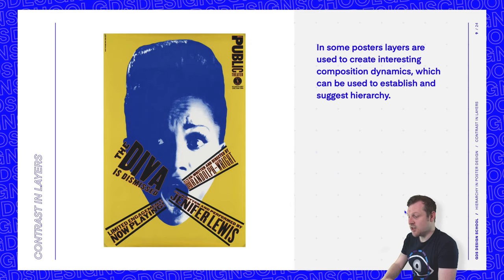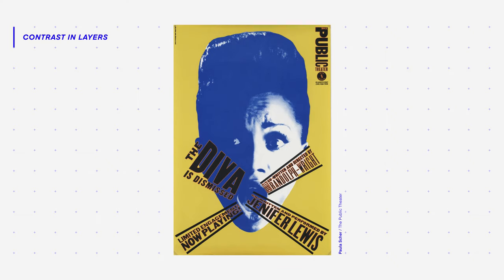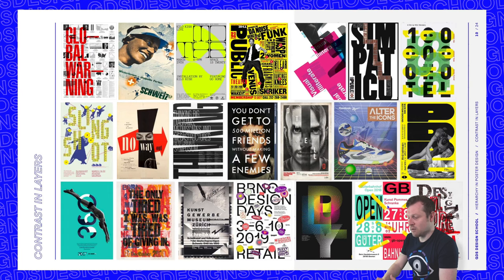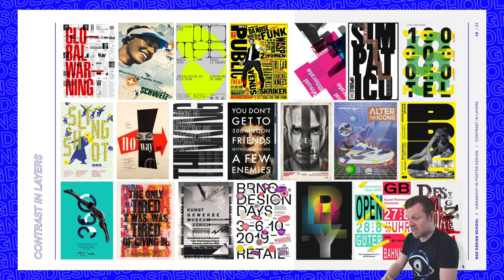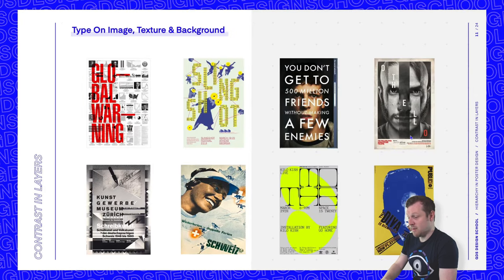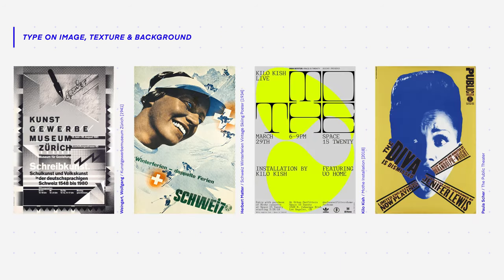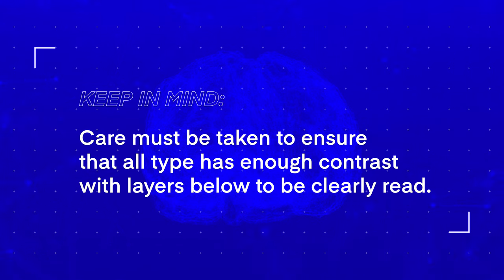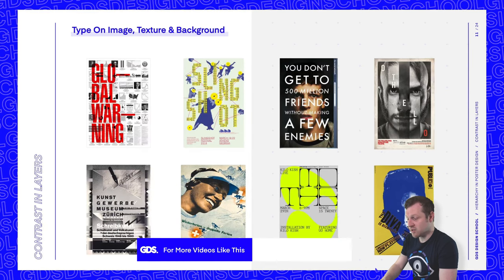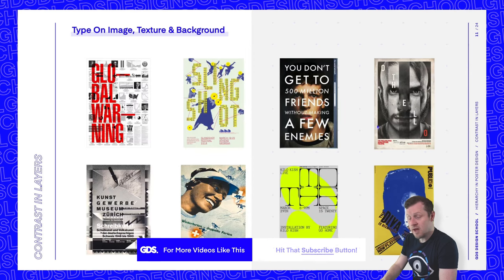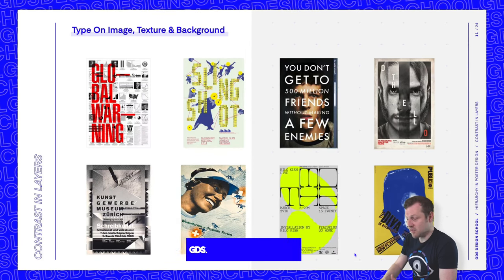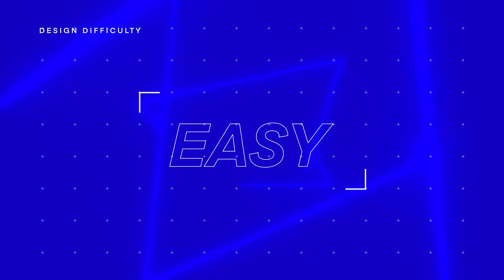In some posters, layers are used to create interesting composition dynamics, which can be used to establish and suggest hierarchy. Here are some examples of posters that use layering predominantly to establish a clear visual hierarchy. Some place type on top of an image, texture, or colored background. This is the most straightforward way to present visual information as clearly as possible, typically including only a few layers. Placing type on top of an image allows for more legibility, but care must be taken to ensure all type has enough contrast with layers below. In these examples, there is adequate contrast in color of the type on top of the layers below to establish clear legibility. The difficulty level of this technique is easy.